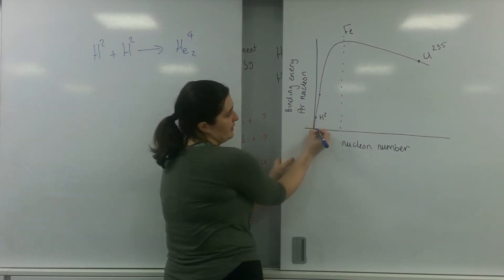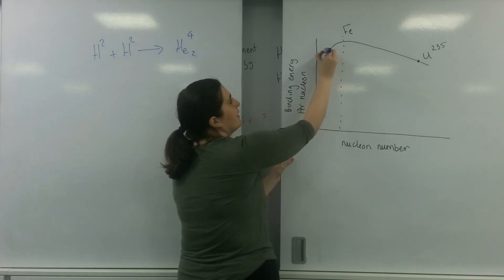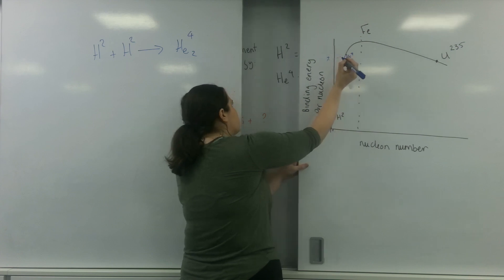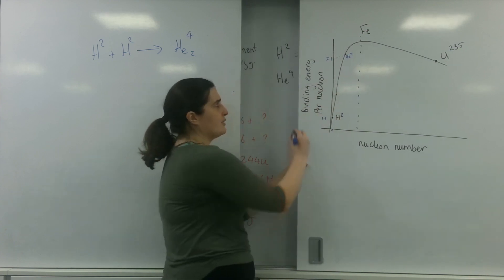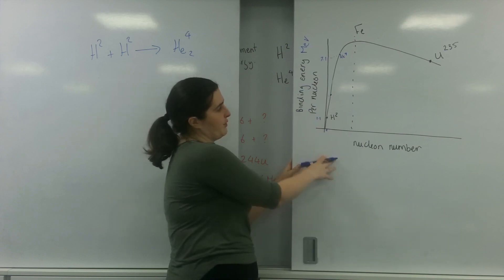So here's an example here of the kind of graph you would get it from. This is hydrogen 2 because this would be where 2 is on the nucleon number and that would be 1.1. And this up here, it's much higher. It's about here for my helium with 7.1. And this, of course, is in MEV. So I've got this information from this graph.